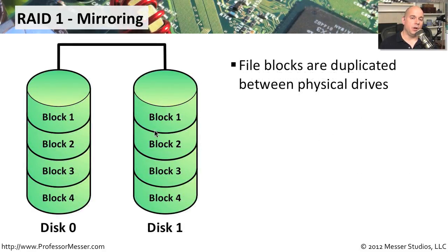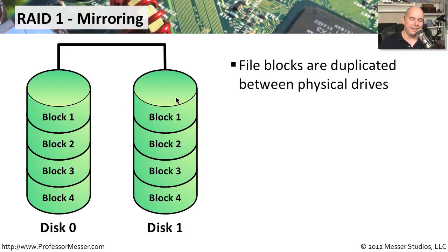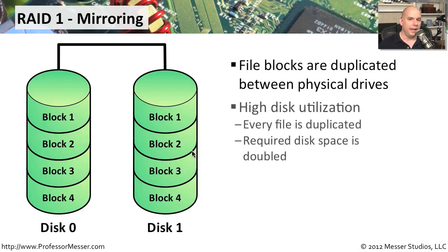RAID 1 is called mirroring. With mirroring, we duplicate the data across multiple physical drives. If a file is broken into blocks, one block is written to disk 0 and an identical copy is written to disk 1. Everything on disk 0 is exactly the same as disk 1, meaning a lot of writing takes place — every write goes to multiple disks simultaneously.